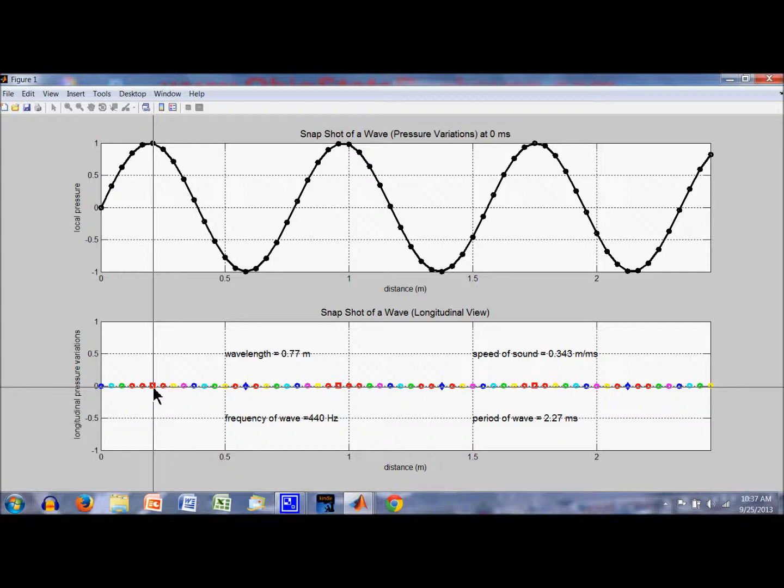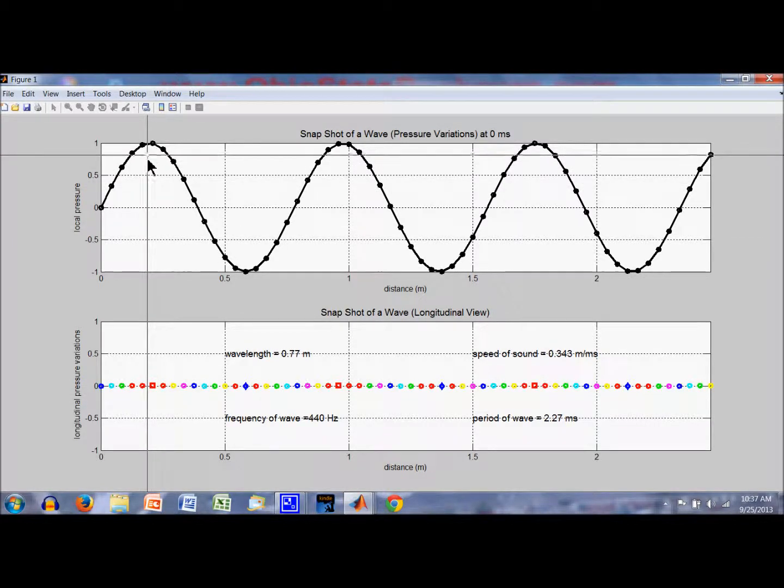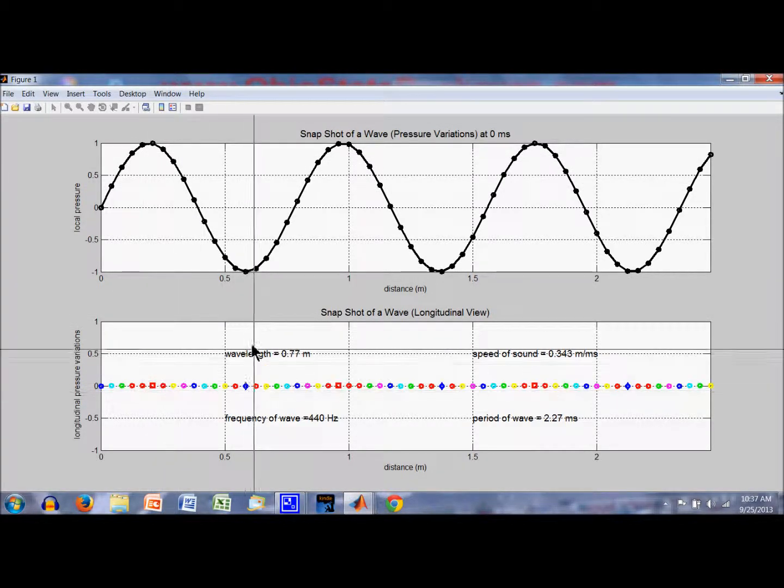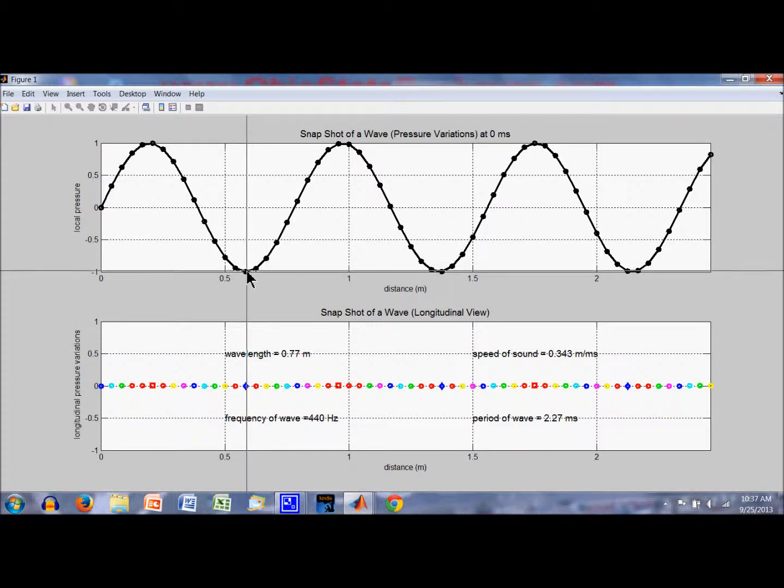The red squares are corresponding to the peaks in pressure. The blue diamonds corresponding to minimum in pressure. The peak in pressure would be a compression point, and the minimum in pressure would be a rarefaction. So we have points of compression and rarefaction alternating.